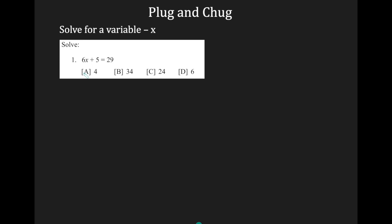So you can use plug and chug if they ask you to solve for your variable. Now, your variable could be x. Sometimes they use y as a variable or they could use the letter A or the letter B. Any letter in the alphabet can be used as a variable. So here, they want me to solve 6x plus 5 equals 29. I'm given four choices of what my answer for x could be.